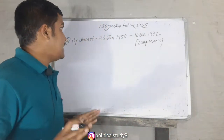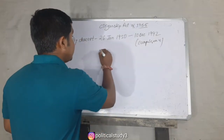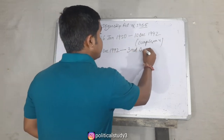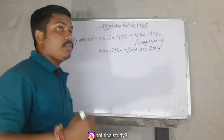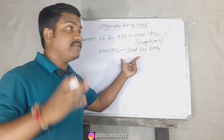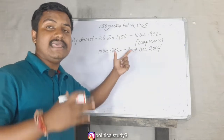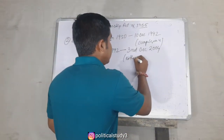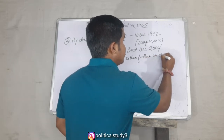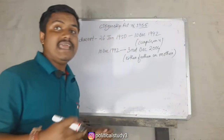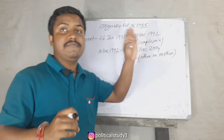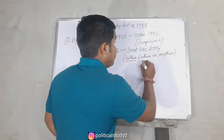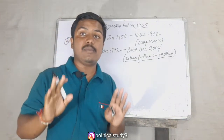The second date says that if a person is born outside India between 10 December 1992 and 3 December 2004, then he is a citizen of India, but either father or mother should be a citizen of India at the time of his birth. Unlike the first date which required only the father, the second date allows either parent.